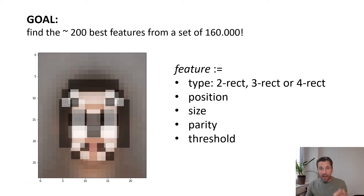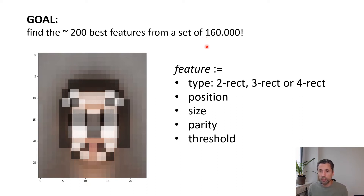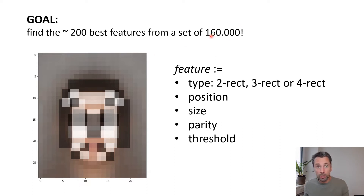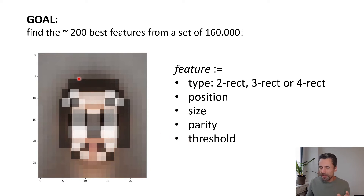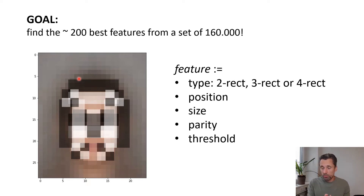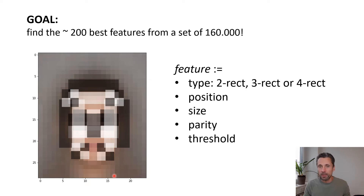Our goal is to find exactly those 200 features that best predict whether an input is a face or not. We start with a huge number of features over a very small input image. There are only three types of features, but varying their parameters — position, size, and configuration of blocks — gives us a whole large set of features, and we need to determine which ones are the best.